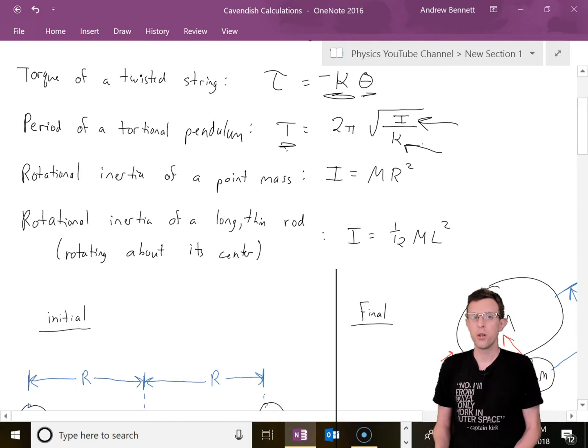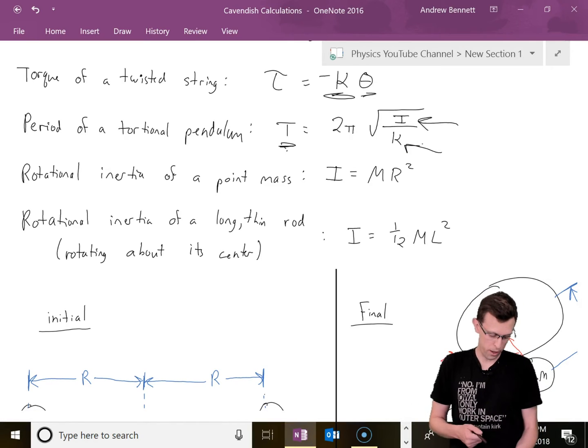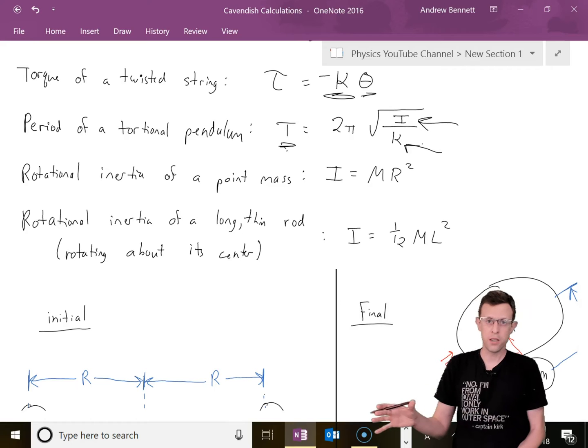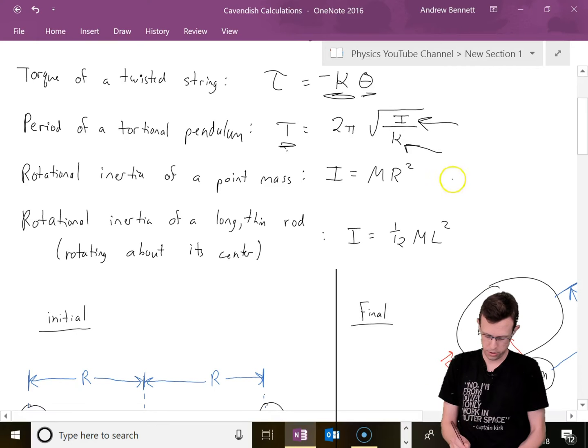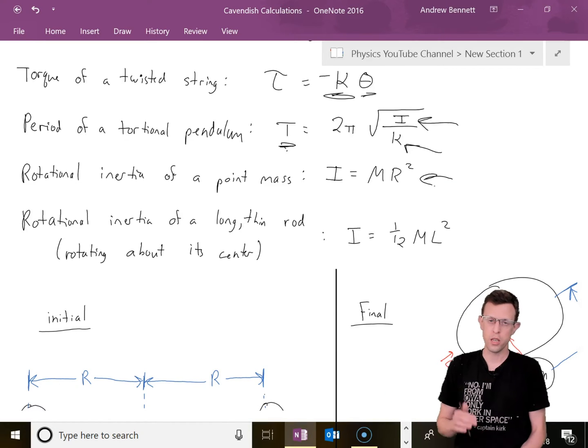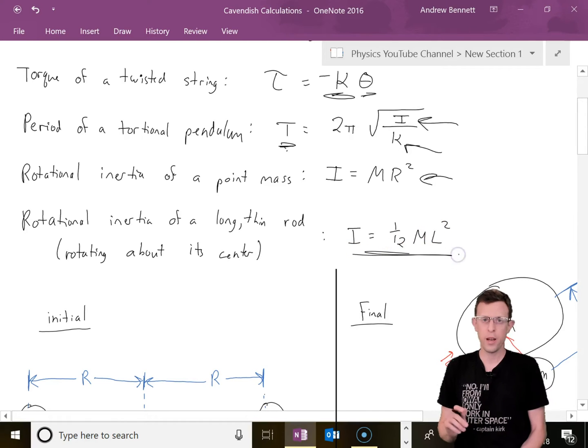Next up, rotational inertia equations. We'll have two large masses at the end of the rod treated like point masses, I equals MR squared. And then a long thin rod rotating about its center, I equals 1/12 ML squared.